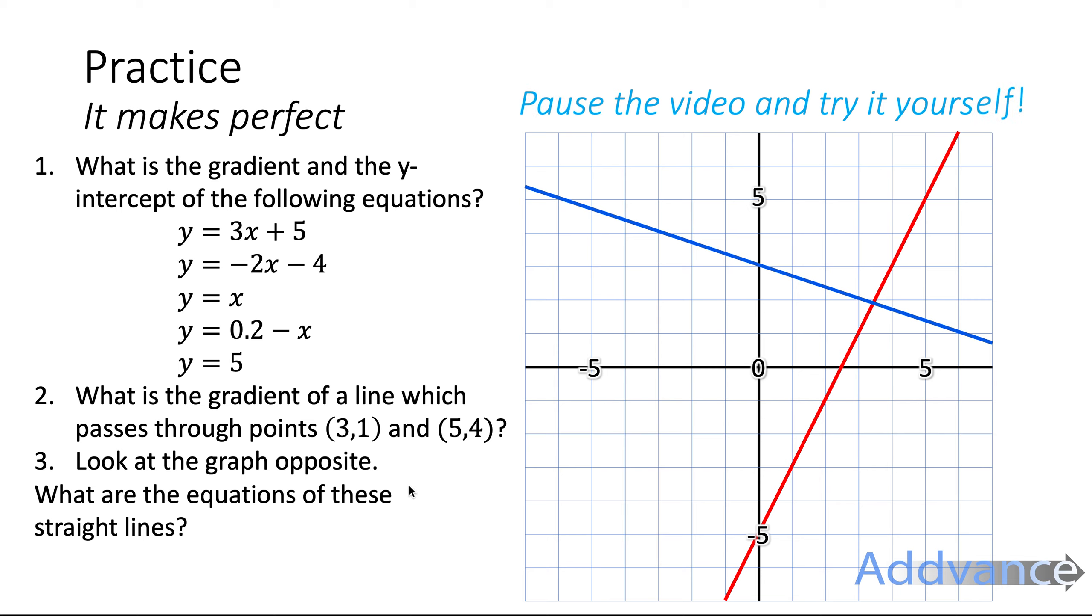You'll use the y2 minus y1 over x2 minus x1 equation for that one. And then it says, look at the graph opposite, work out the equations of these straight lines. So work out the gradient of these two lines, and then work out the y-intercepts just by looking at where they cross the y-axis.